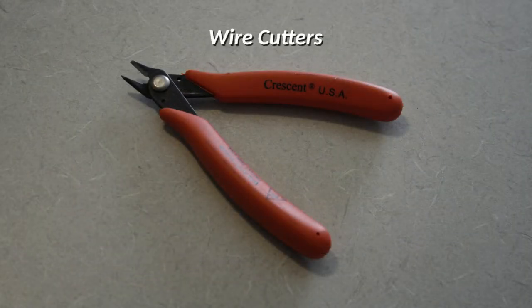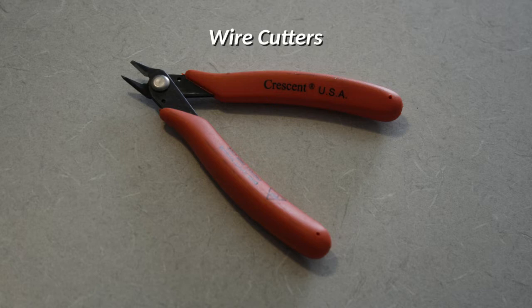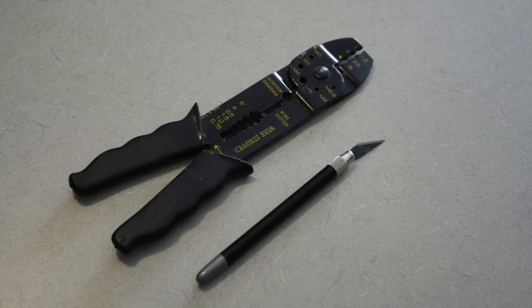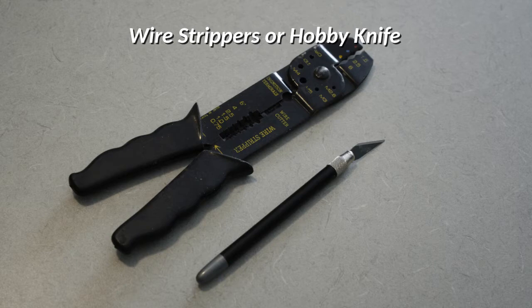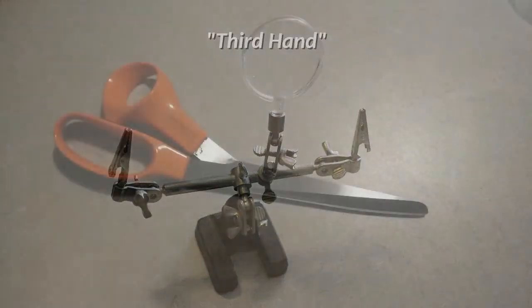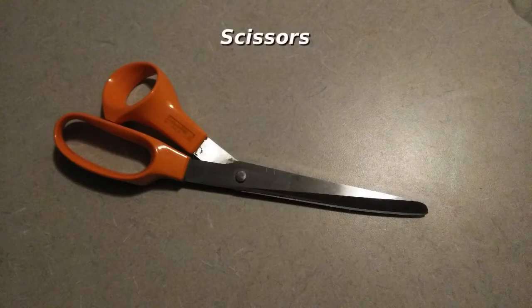Of course, you'll need wire cutters. For stripping insulation from wires, you can use either a wire stripper or a hobby knife. Although it's not absolutely necessary, a third hand with alligator clips for holding wire can make this job a lot easier. You'll want some scissors for cutting tape and velcro.